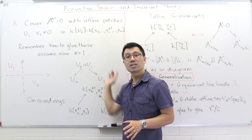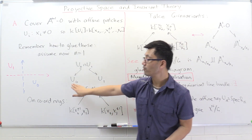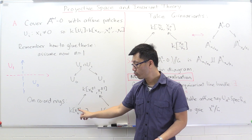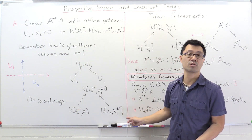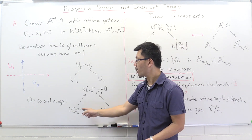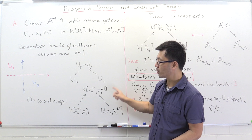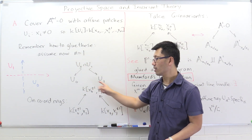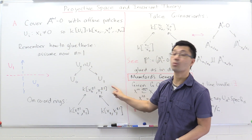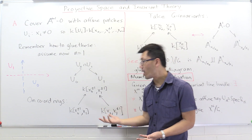To study this gluing diagram completely algebraically, we work on the coordinate rings. The coordinate ring of u0 is K[x0, x1, x0^{-1}], and of u1 is K[x0, x1, x1^{-1}]. For the intersection where both x0 and x1 are non-zero, we need both inverses, so the coordinate ring is K[x0, x0^{-1}, x1, x1^{-1}]. This diagram on the ring-theoretic level, with two localization maps, captures the geometric gluing.